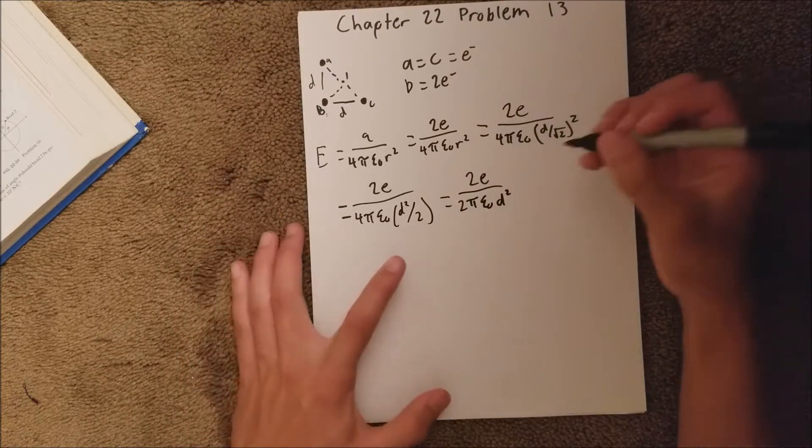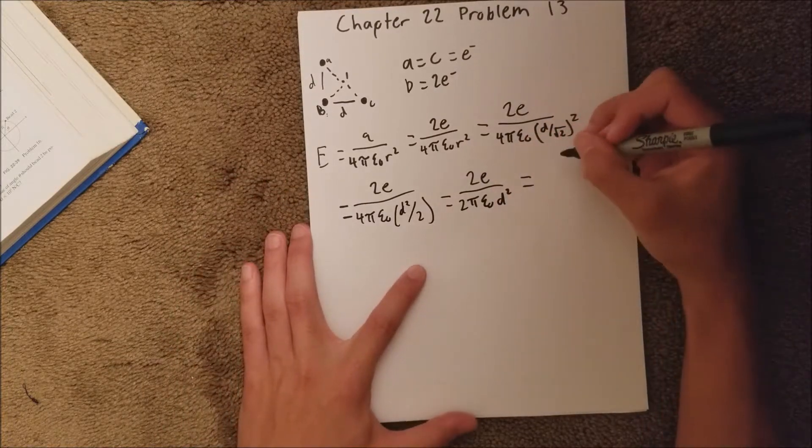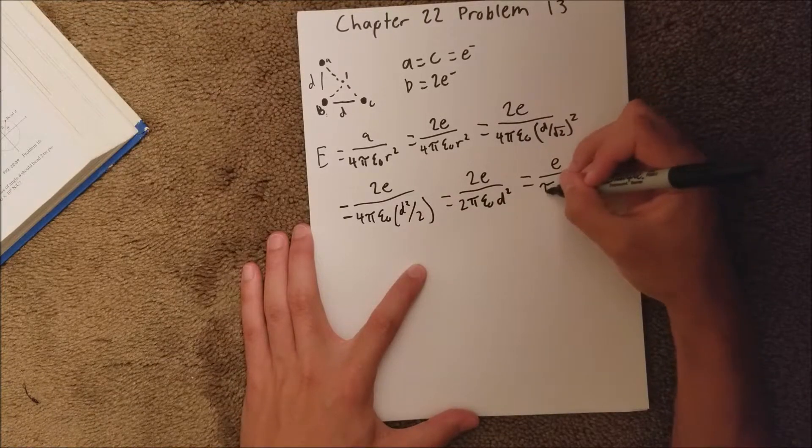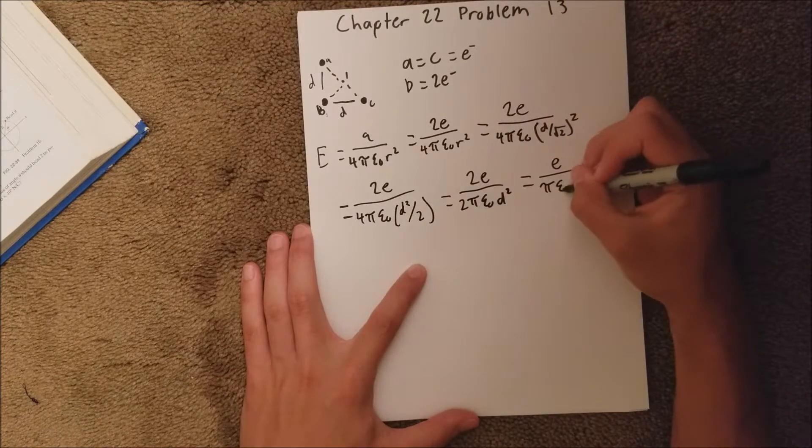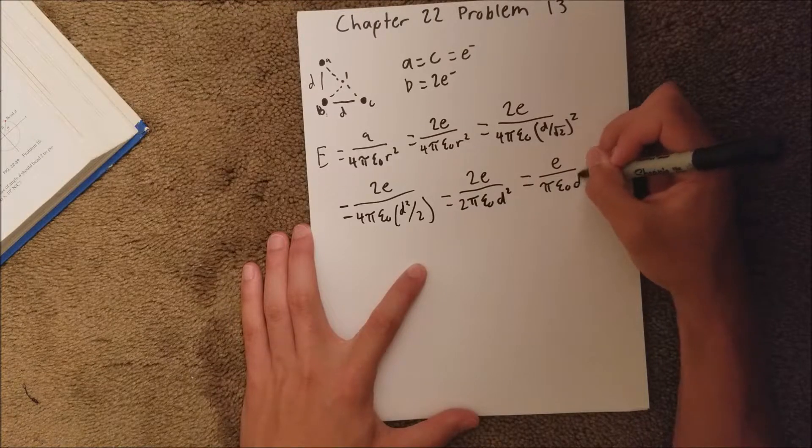And then finally, if you get rid of those 2s, you're left with E over pi epsilon sub 0, D squared.